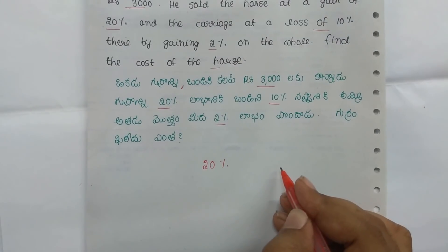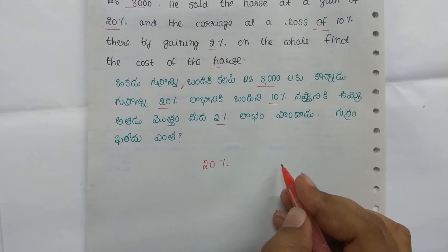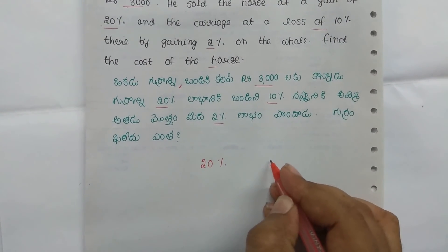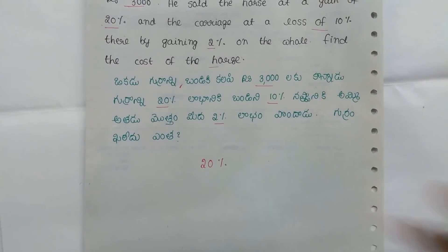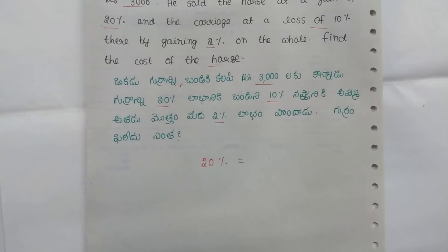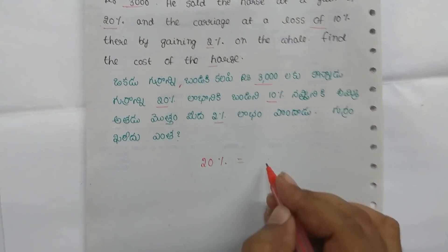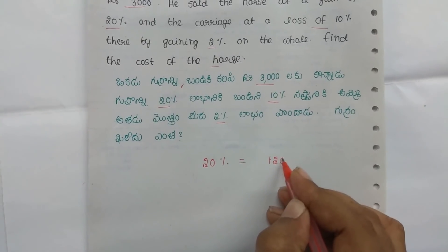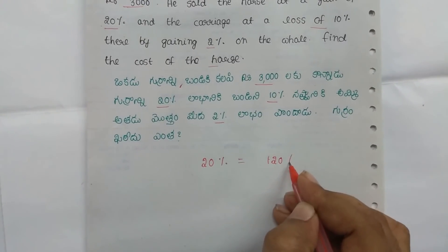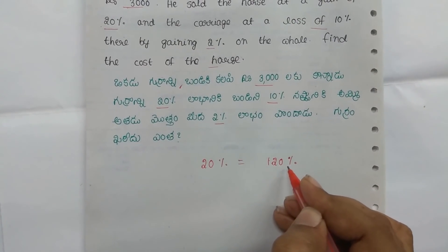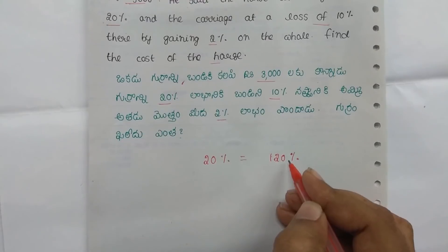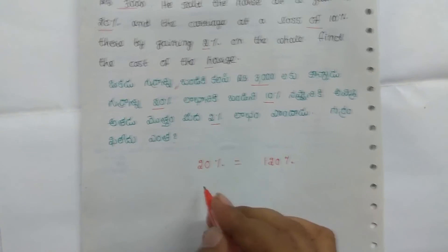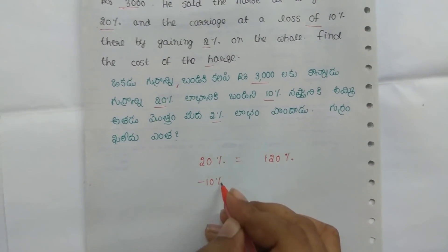So 10% loss on one item, 20% gain on the other. First: 20% gain, 10% loss.